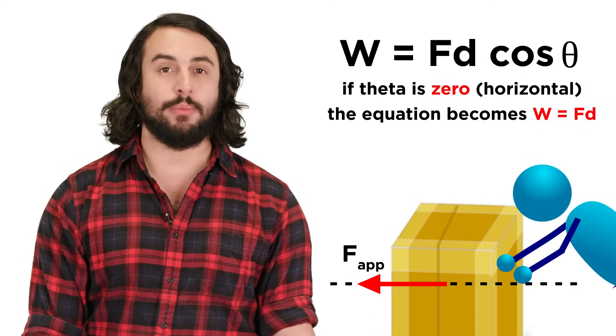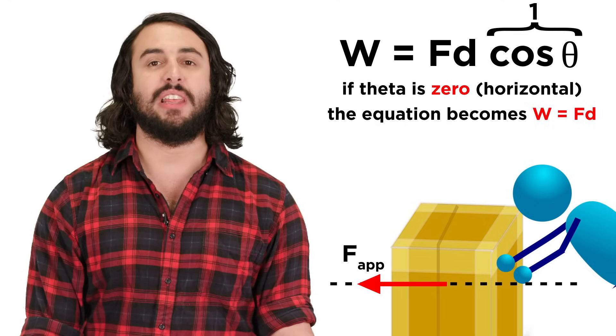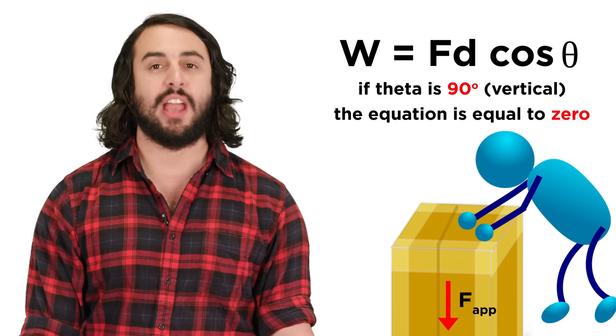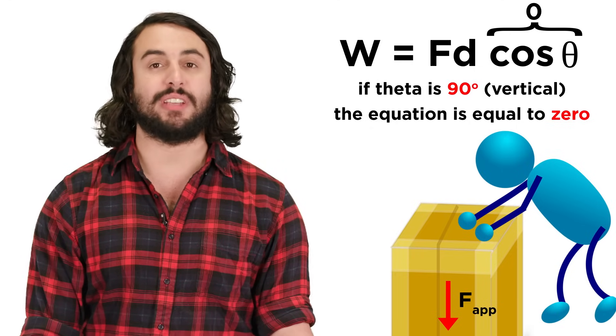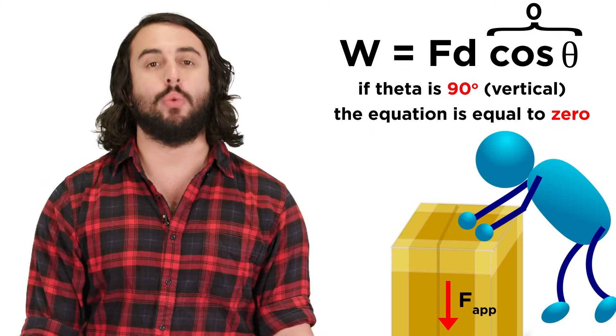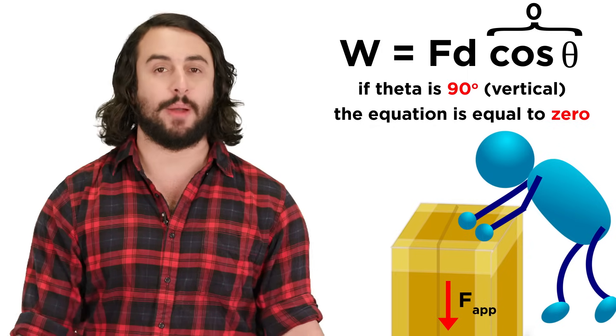If theta is zero, meaning the applied force is horizontal, cosine theta will be equal to one, leaving us with W = Fd. And if you were to push straight down on the box, theta will be ninety and cosine theta will be zero, meaning no work is done on the box and it will not move. Any angle in between and there will be some motion.